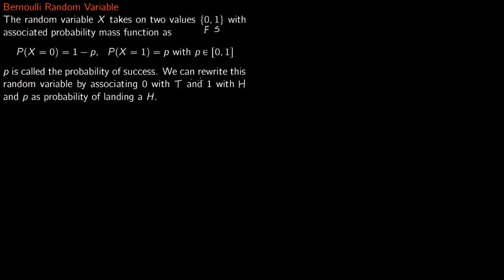You can rewrite this random variable. Instead of 0 you could write tail, and instead of 1 you could write head. So 0 is associated with tail, 1 is associated with head, and p is the probability of landing a head.